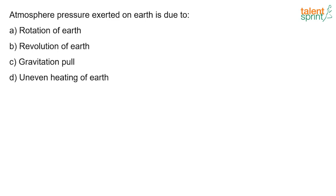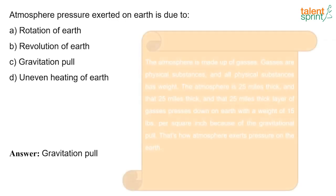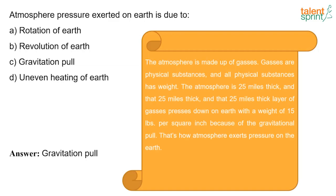Atmospheric pressure exerted on Earth is due to gravitational pull. The atmosphere is made up of gases, and all physical substances have weight. The atmosphere is 25 miles thick and this presses down on Earth — that is how atmospheric pressure exerts pressure on Earth.